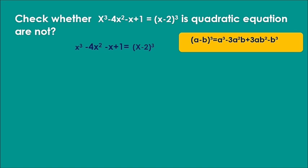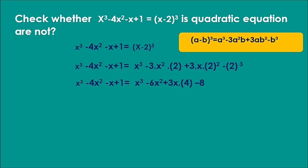So, x³ minus 4x² minus x plus 1 equals x³ minus 3·x²·2 plus 3·x·2² minus 2³. This gives x³ minus 6x² plus 3x·4 minus 8, which simplifies to x³ minus 6x² plus 12x minus 8.